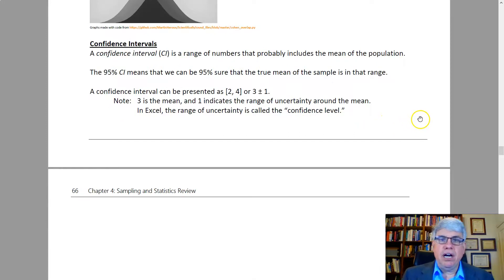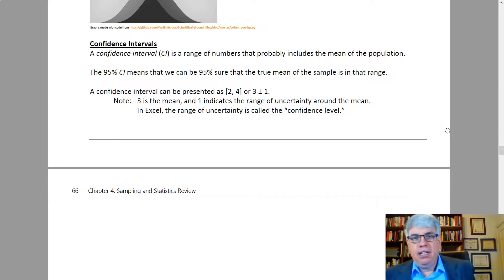Now let's talk about confidence intervals. The abbreviation for the confidence interval is CI. It's the range of numbers that probably includes the mean of a population. If we were to test people to find out the average height of humans, five-six, we get the average.